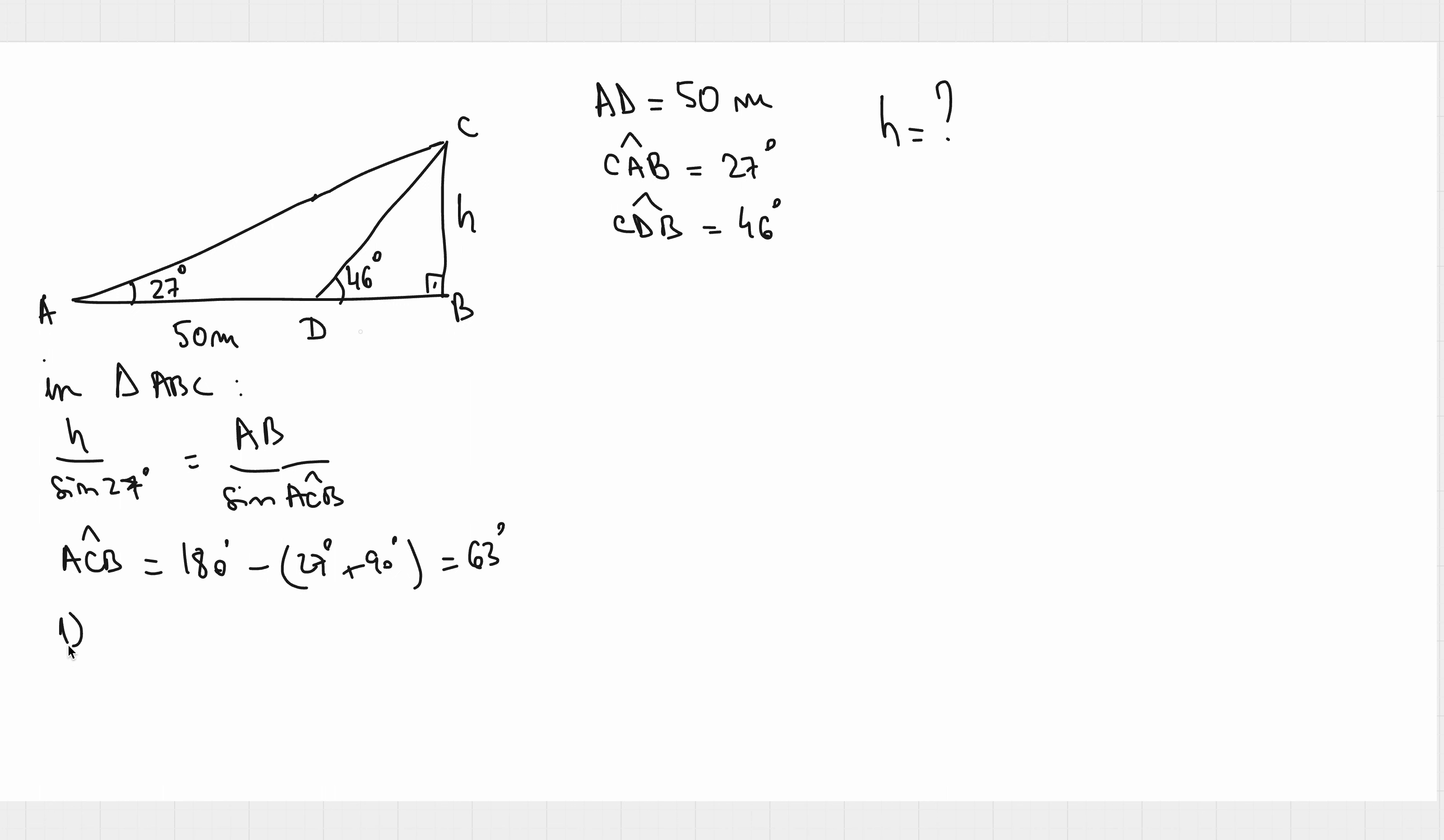And we will have our first relation which is H over sine of 27 degrees, and we can express AB in terms of H. AB in this case is H times sine of 63 degrees over sine of 27 degrees and that will give us 1.963 times H for AB.